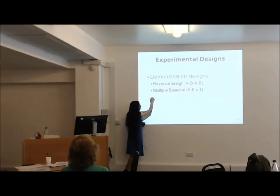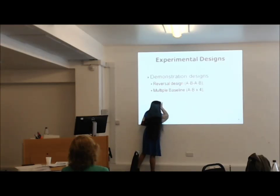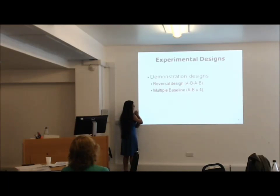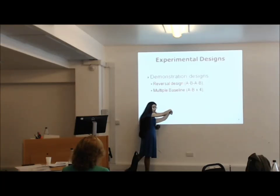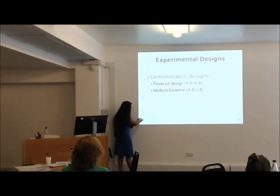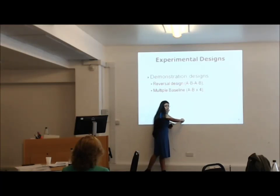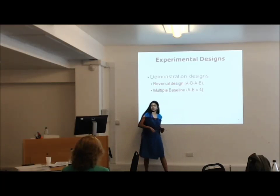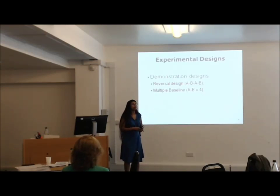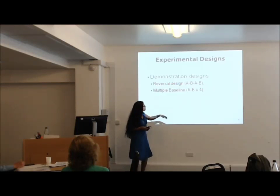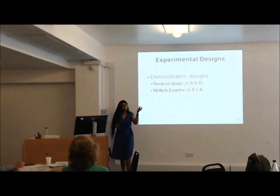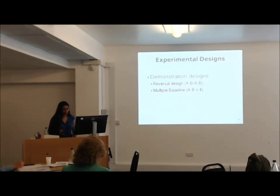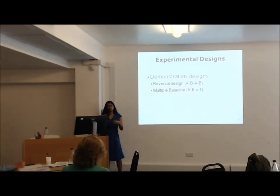For example, Bob's problem behaviors are measured for 10 time points and then an intervention is implemented. Then Sam is observed for 15 time points before intervention, and Mary for 20 time points. You stagger it and see if there is replication across different time points — at time points 10, 15, and 20 for those respective participants. That is a multiple baseline design, and technically people ask for at least four such cases to show strong evidence.